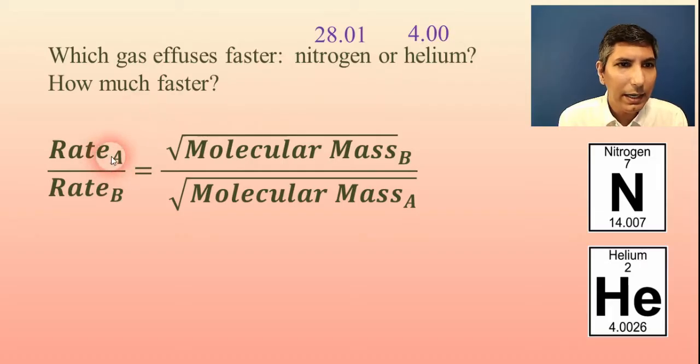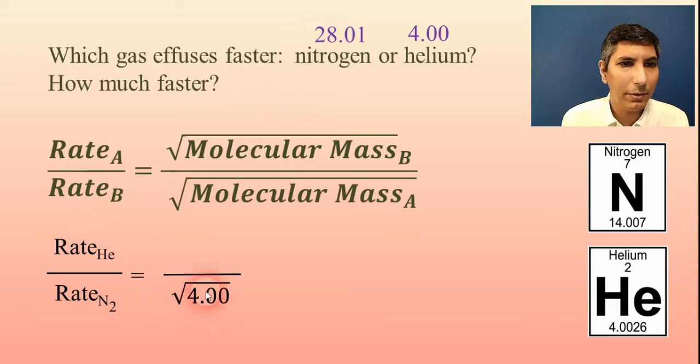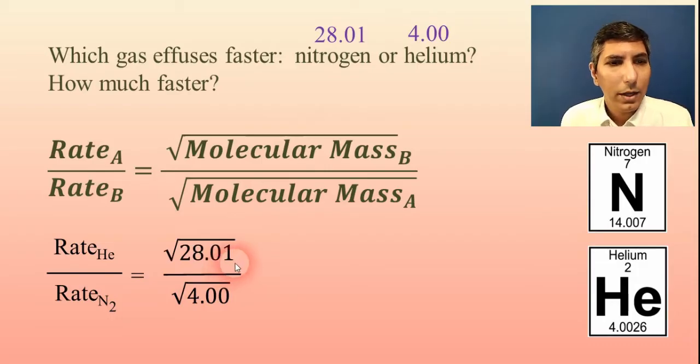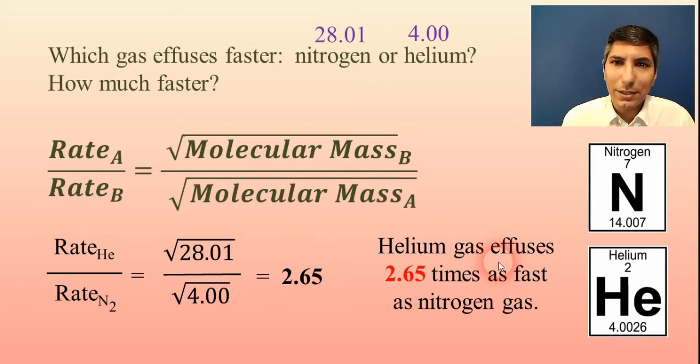So I'm going to plug in helium as gas A since it is the lighter gas. And I'll put in nitrogen as gas B since it is the heavier gas. Now, once again, helium, since it is the lighter number, has to go down here. They're kind of across from each other there on the diagonal. And then nitrogen, the 28.01, will go in the numerator. So we have this. So all I have to do now is plug square root of 28.01 divided by square root of 4 into my calculator. And when I do that, I get an answer that's very close to about 2.65. And so this is the ratio. This is telling us that helium gas effuses 2.65 times as fast as nitrogen gas. And that's all you have to do.